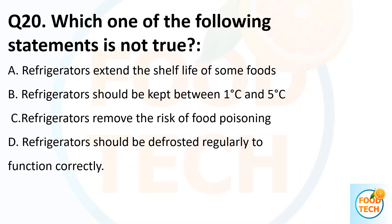Question 20. Which one of the following statements is not true? A. Refrigerator extends the shelf life of some foods. B. Refrigerator should be kept between 1 degree Celsius and 5 degree Celsius. C. Refrigerator removes the risk of food poisoning. D. Refrigerator should be defrosted regularly to function correctly.